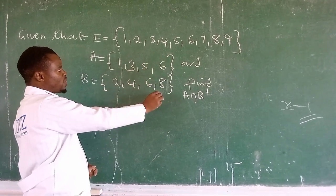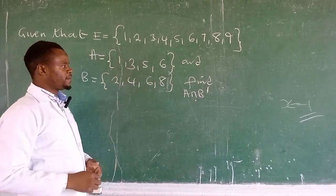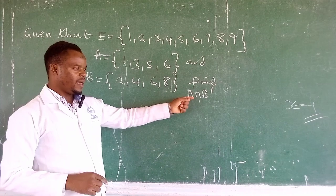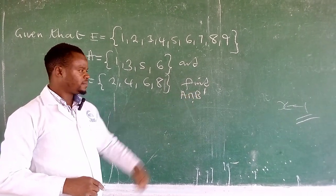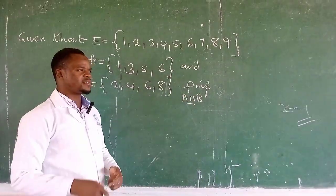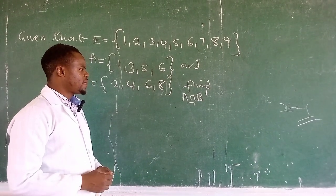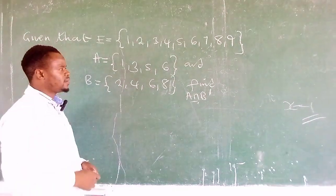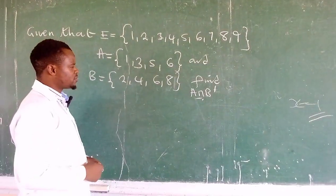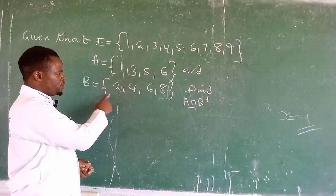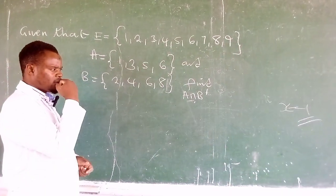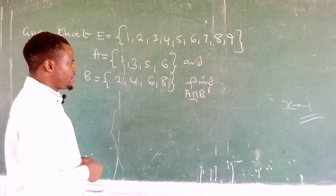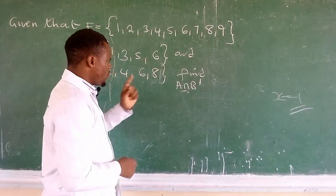So after having that, let's find A intersection B'. Now the intersection set is simply the set of elements that are found in the sets that are considered. Since we are looking at set A and set B, the question is what are those elements that are featuring in both sets.